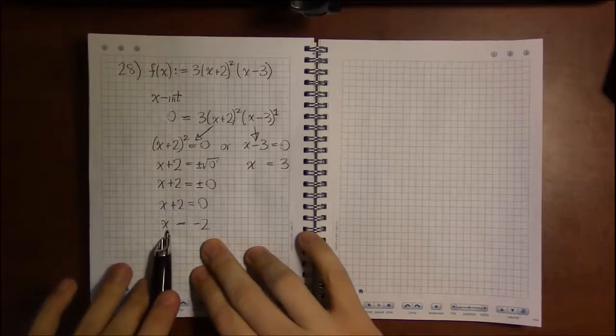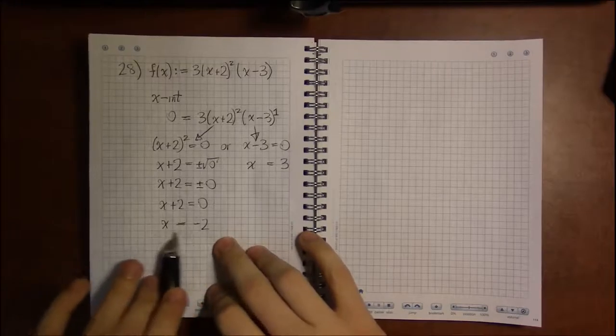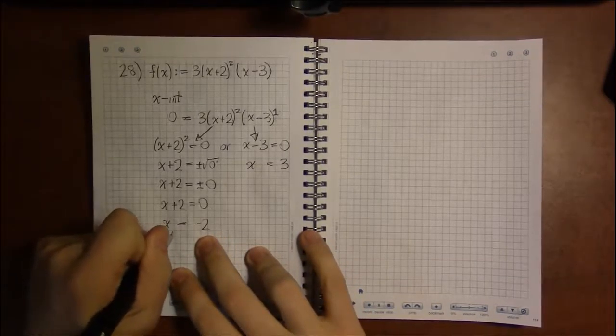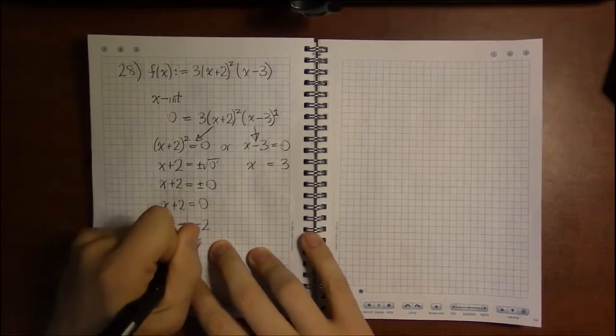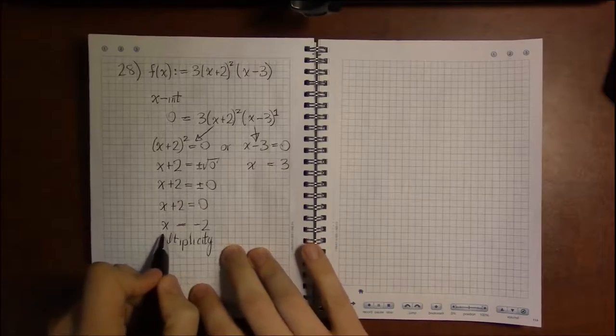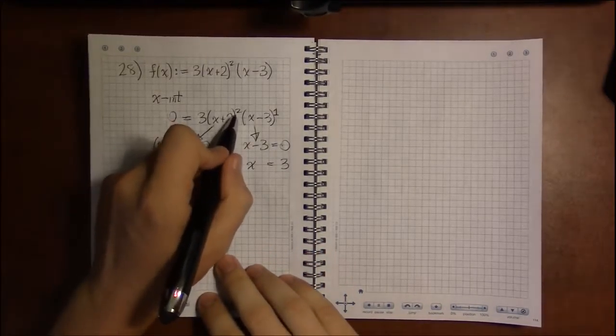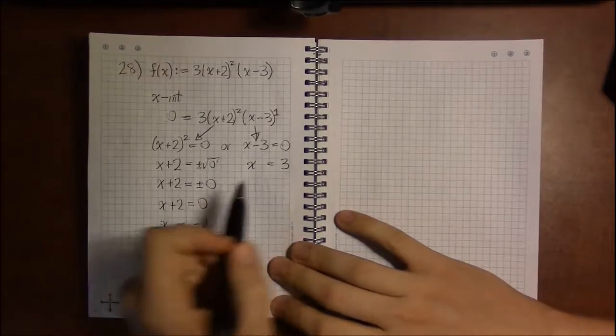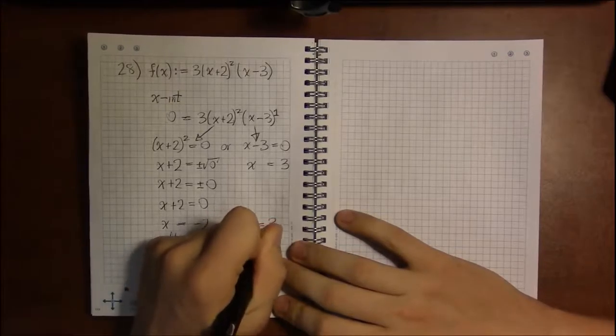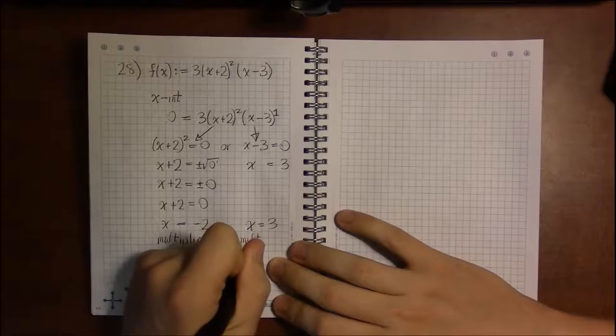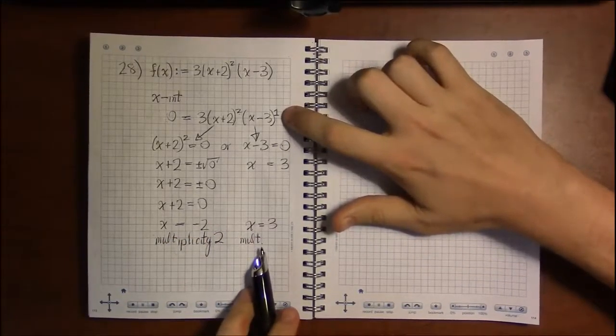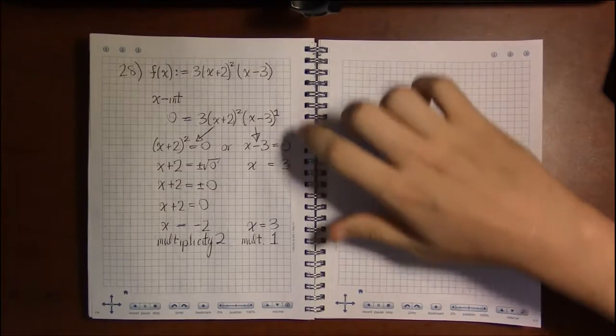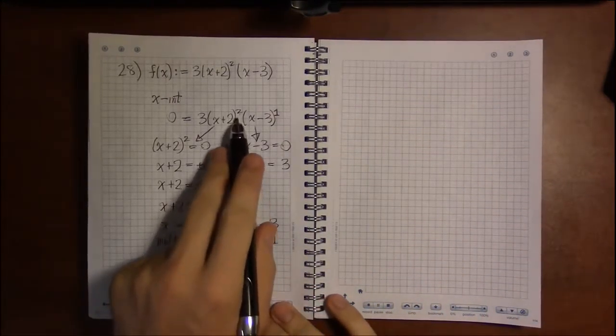So once we're solving, this exponent—the exponent that came from this particular x-intercept—if we follow our way back, this exponent is what we call the multiplicity of the zero. So we say that x = -2 is an x-intercept with multiplicity 2. And for example, over here we said we had an x-intercept of 3. Well, the multiplicity of this x-intercept is just 1.